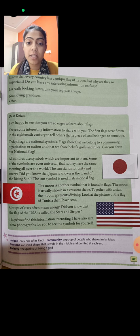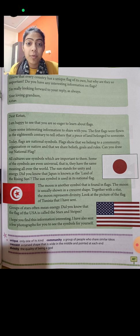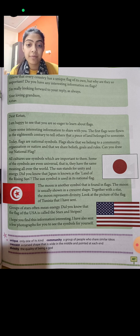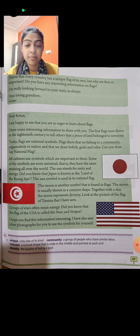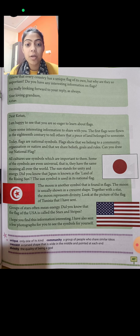The first flags were flown in the 18th century to tell others that a piece of land belonged to someone. Mere paas flags related bahut achhi information hai jo tum se share karna chahti hoon. First flag flown hua tha 18th century mein, jo batata tha ki yeh piece of land is person se belong karta hai.